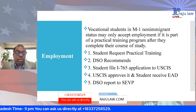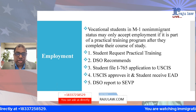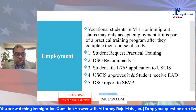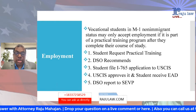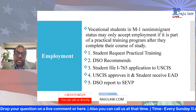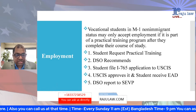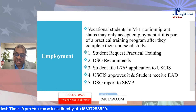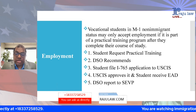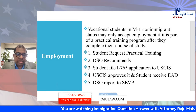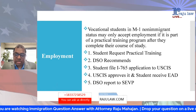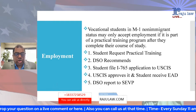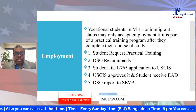The process for practical training employment is: first, request practical training from your DSO. The DSO recommends eligibility, then you file Form I-765 employment authorization with USCIS. Unlike F1 OPT, this does not come automatically — you must submit Form I-765 to USCIS. USCIS approves it and you receive an EAD card. Once you have an EAD card, the DSO reports to SEVP that you have employment authorization and are starting practical training.